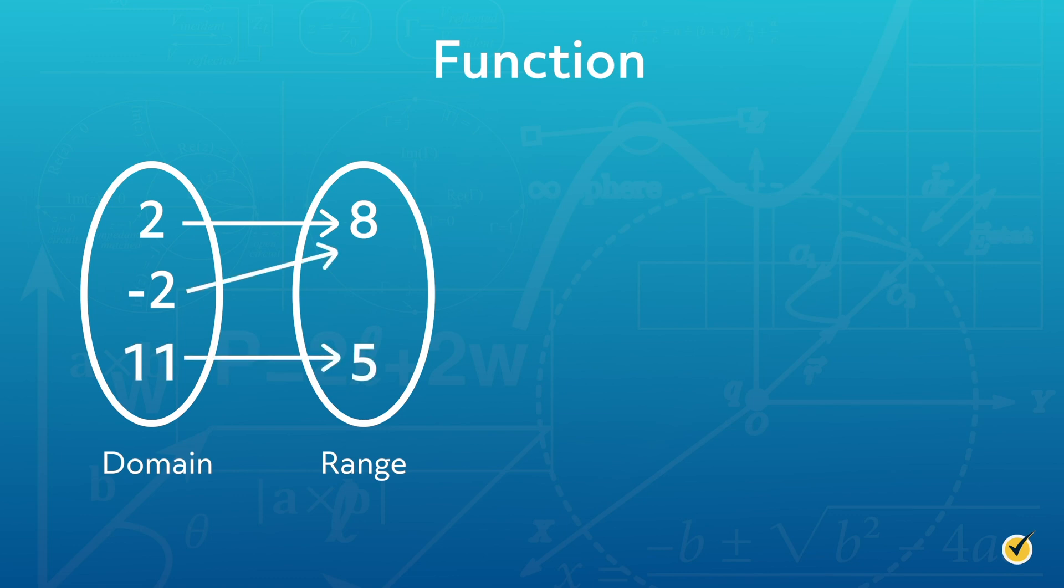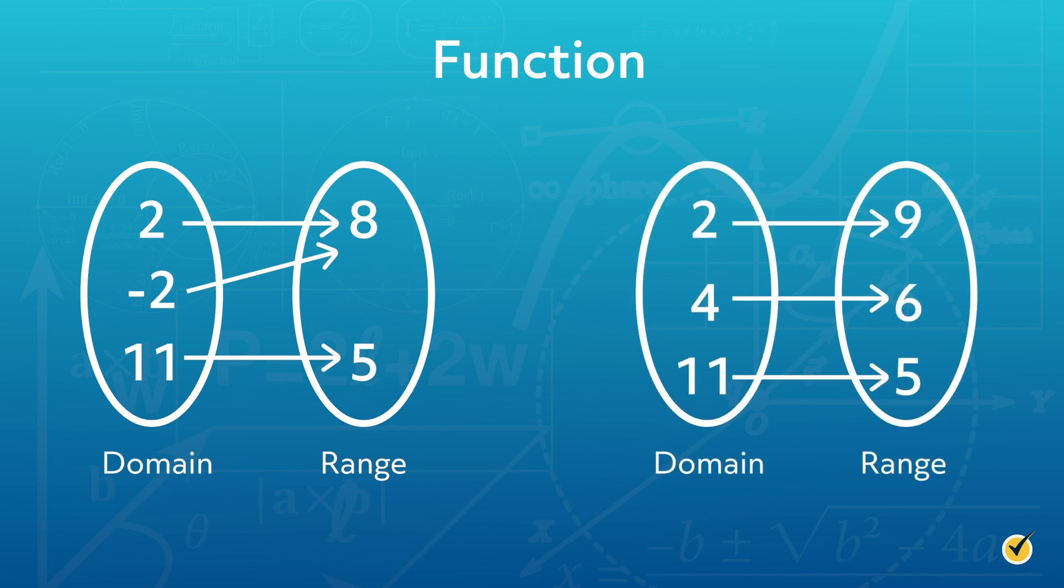Several domain values can map to the same range value. However, there is a special type of function that maps each domain value to a unique range value. These functions are referred to as one-to-one. Now that we have the definition of a function in mind, we can discuss how functions are classified.